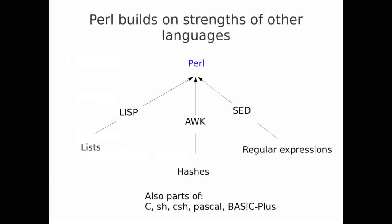Perl is built upon the strengths of other languages. For example, the lists come from Lisp, the hashes come from Orc, and the regular expressions come from Sed. There's also parts of C, Shell, Seashell, Pascal, and Basic, all rolled into a single language that tries to do many things.